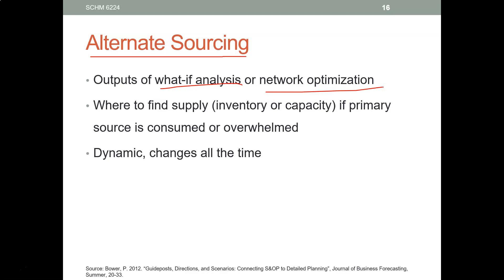Many companies purchase critical raw materials, and a typical problem is relying on a single supplier — that's too risky. If you put all your eggs in one basket and that supplier goes out of business, you're in trouble. So many companies find multiple sources for their raw materials. In addition to your primary supplier, which other suppliers should you consider? You can use what-if analysis or network optimization for this. You need to monitor changes among your suppliers as well as your customers.